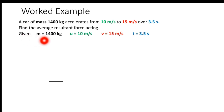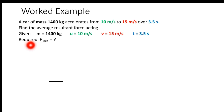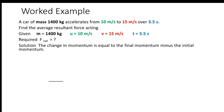Given: mass = 1400 kg, initial velocity = 10 m/s, final velocity = 15 m/s, time = 3.5 seconds. Required: find the resultant force. Solution: The change in momentum equals the final momentum minus the initial momentum.